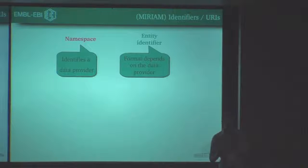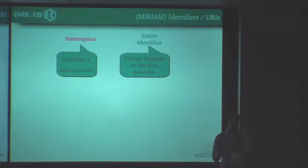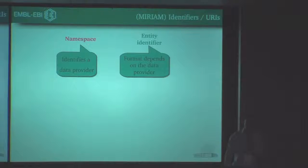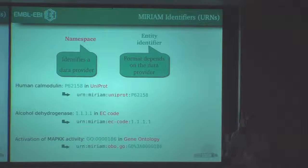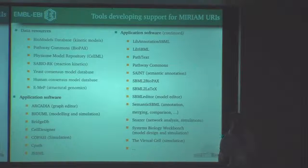So we decided to create something very simple, basically composed of two things: one that we call the namespace, which identifies the data provider, and another one which is the identifier of a very specific piece of data provided by that data provider. This identifier is usually given by the data provider itself. We complemented this information and created an identifier, which is a URL.